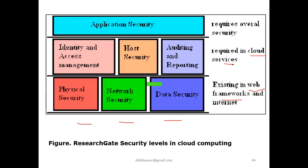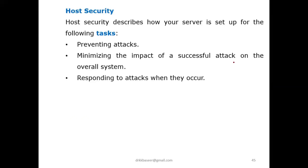At the web framework layer, we talk about physical security, network security, and data security. Moving to the next level — cloud services level — this security is required. At the cloud services level we have IAM, which stands for Identity and Access Management, which we have already discussed. Also at cloud services we have host security, auditing, and reporting. Application security covers the overall total entire application security.